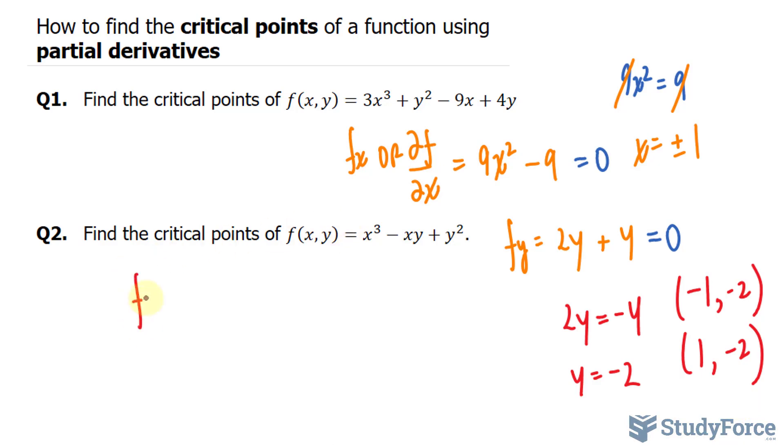So we'll start by finding the partial derivative with respect to x. This gives us 3x squared. Over here, we'll hold y constant, and taking the derivative of negative x is negative 1. So we have negative y, that becomes 0.